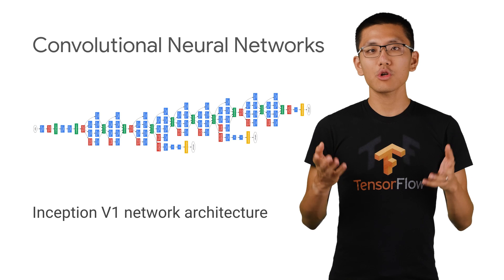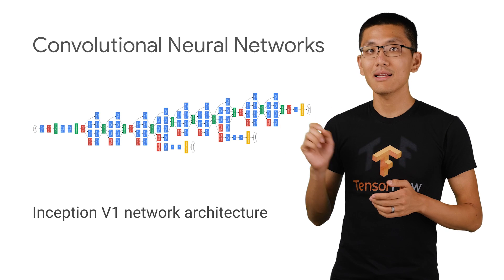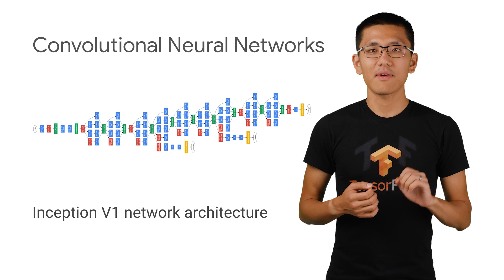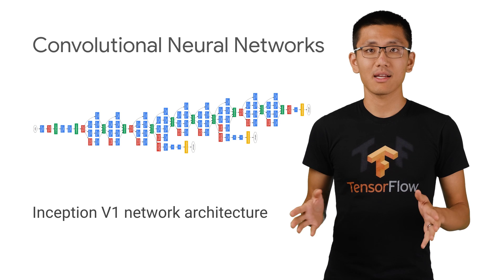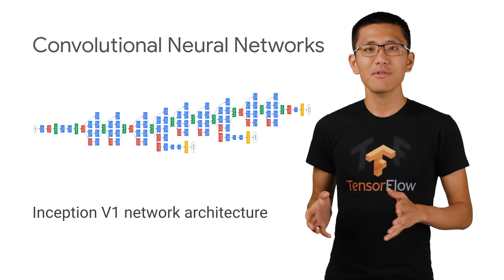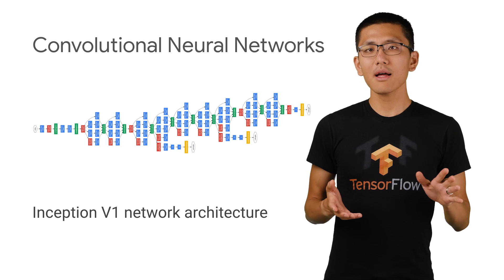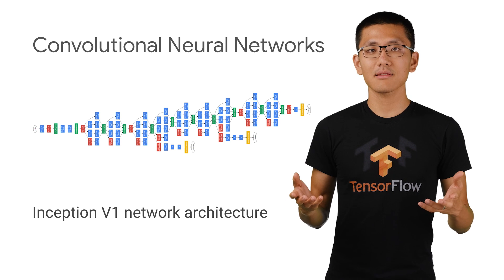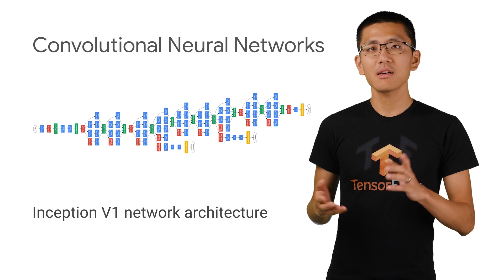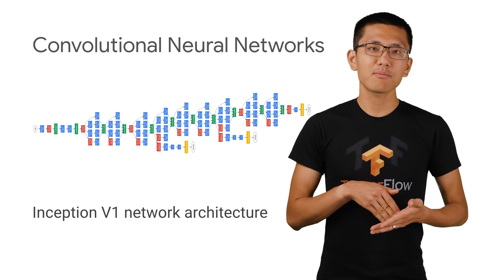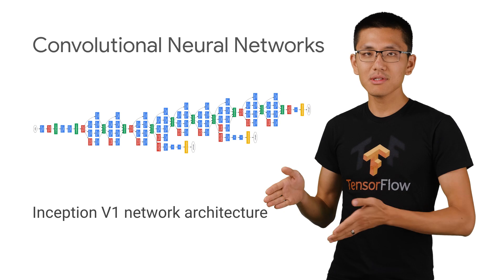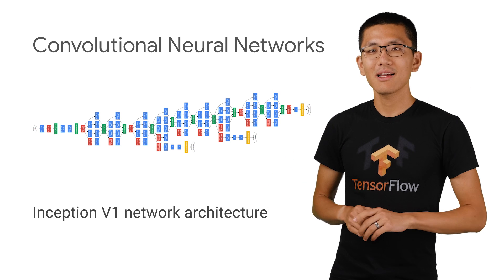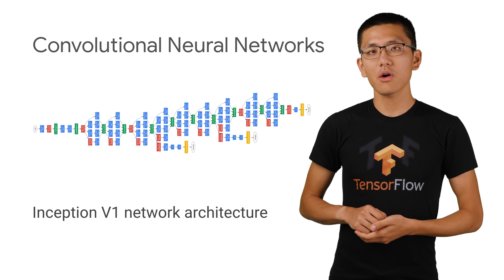Convolutional neural networks, or CNNs, have significantly advanced the state of the art of image recognition. They've achieved incredible accuracy across a wide variety of tasks. But understanding what's happening between the inputs and the outputs in those hidden layers — that's been slow going.